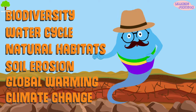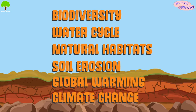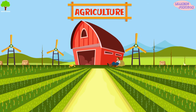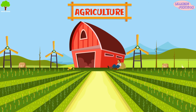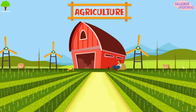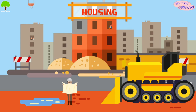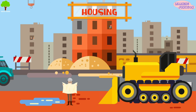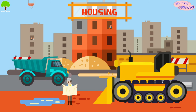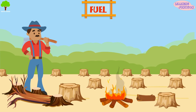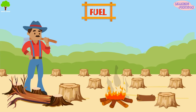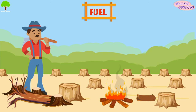Let's see the causes of deforestation. Agriculture – trees are cut to provide land for cultivation and agriculture. Housing – people cut trees to provide land for houses, buildings, and factories. Fuel – wood from trees is burned and used as fuel for cooking and other activities.